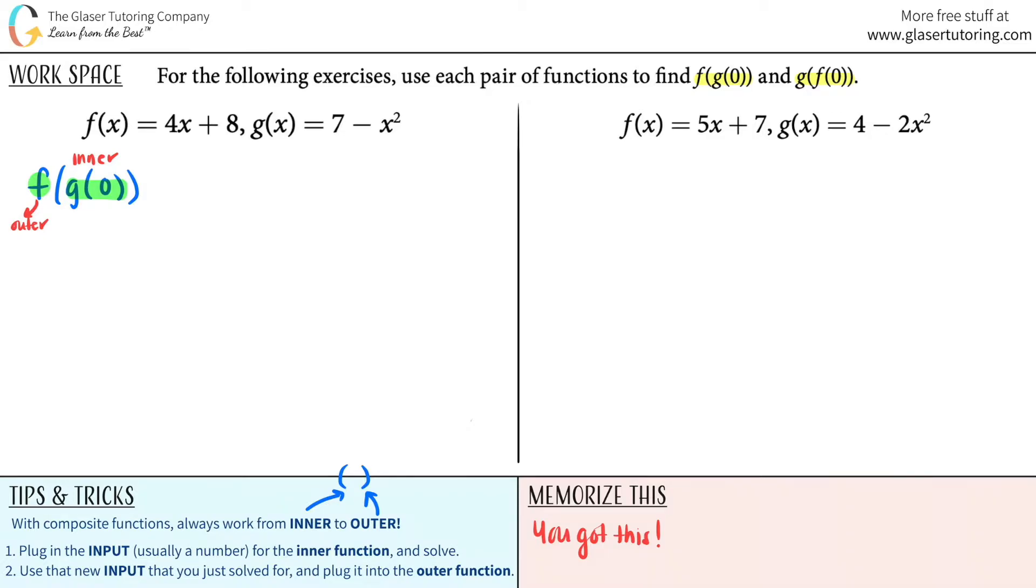So going down to our tips and tricks over here, the first thing we always do is we plug in the input, which is usually a number for the inner function and solve. In this case, we actually have a number. It's 0. So for the first step, we're going to just plug in g of 0. So wherever there is an x in our g function, we will be plugging in a 0 for that. So we have 7 minus, it was x squared, but now since our number is 0, it will be 0 squared.